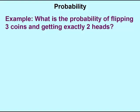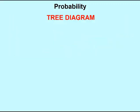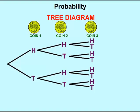Now we'll try a slightly more difficult problem involving the probability of flipping three coins and getting exactly two heads. To help us determine the total number of outcomes involved in flipping three coins, we'll use a tree diagram. To draw a tree diagram, we'll do each coin separately. So for our first coin, the possible outcomes would be heads or tails. We'll attach a second coin to the first coin, giving us four different possibilities. Next, we'll attach a third coin to all of these possible outcomes.